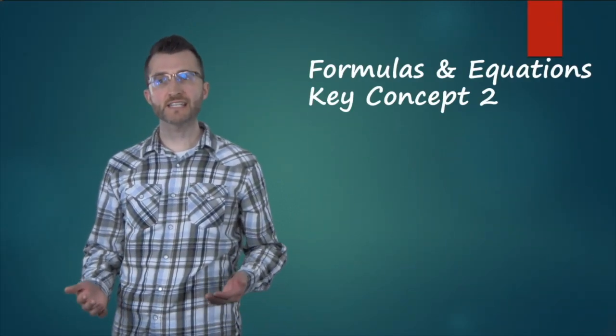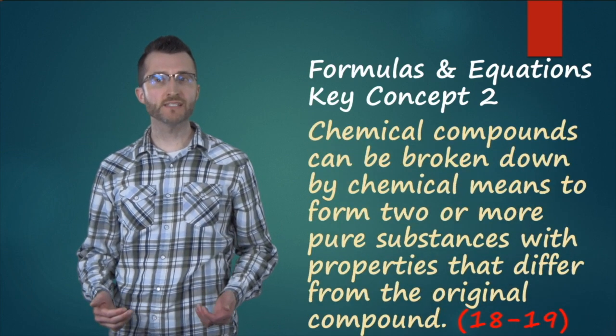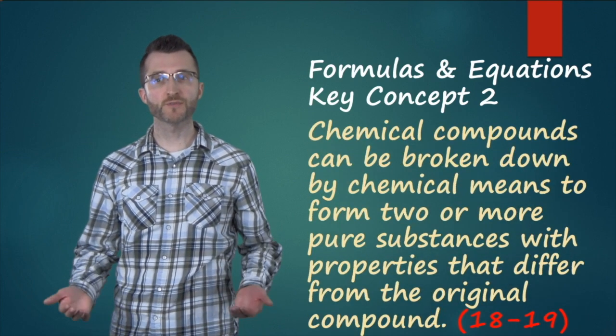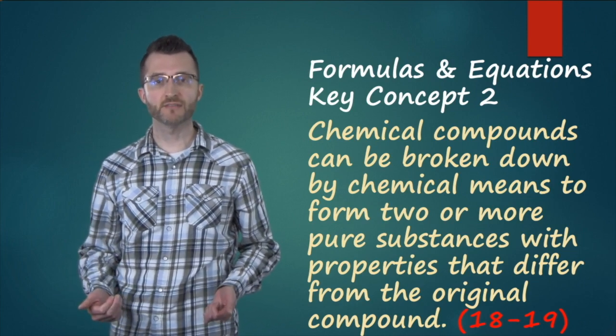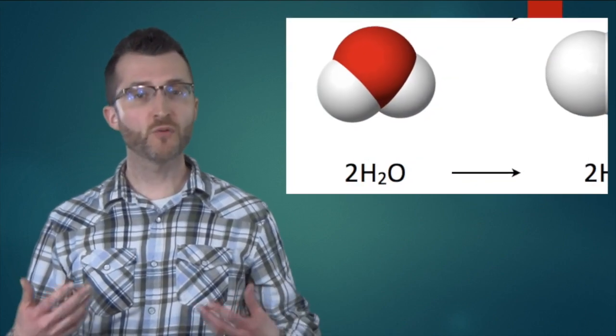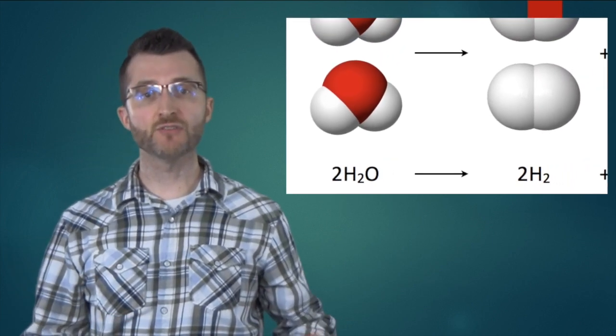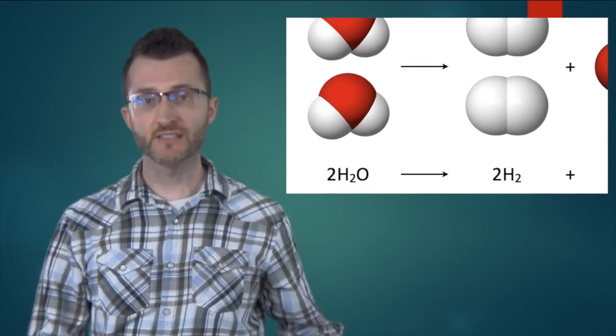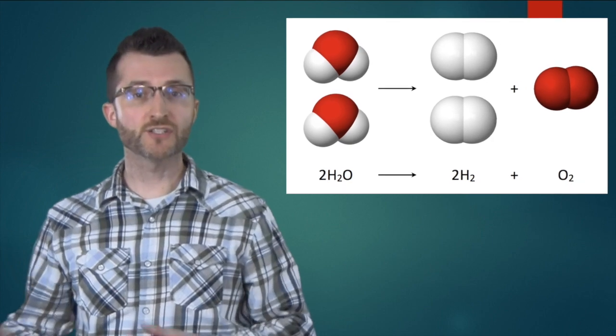Formulas and Equations Key Concept 2. Chemical compounds can be broken down by chemical means to form two or more pure substances with properties that differ from the original compound. Compounds can only be broken down through a chemical change, not a physical one. So when water, for example, breaks down, it's going to break down into hydrogen and oxygen. And hydrogen and oxygen have completely different properties than the original water from which they came.